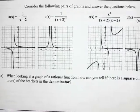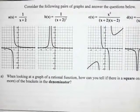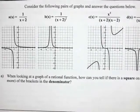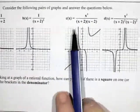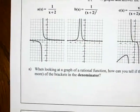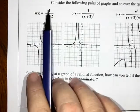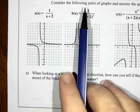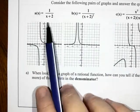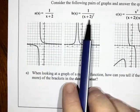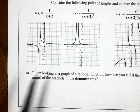Our question says, consider the following pairs of graphs and answer the questions below. So a and b would be one pair and then c and d are the other pair. I have a(x) which is 1 over x+2 and b(x) which is 1 over (x+2)². So I just noticed right now they pretty much look the same except this one has a square.